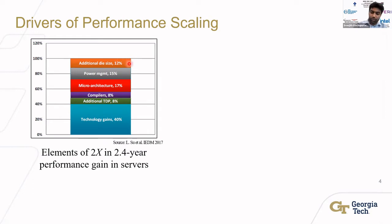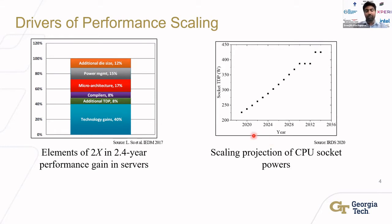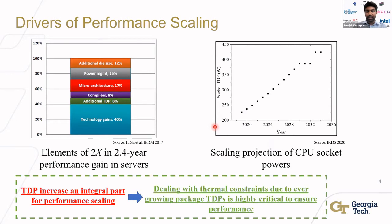A major contributor to increasing performance today is essentially packing more silicon into the package and dealing with higher TDP. Based on IRDS projections, socket TDP for server sockets is projected to increase to much higher levels in the next decade. Managing this TDP increase is integral to keeping up with performance scaling, requiring new and improved thermal management techniques.